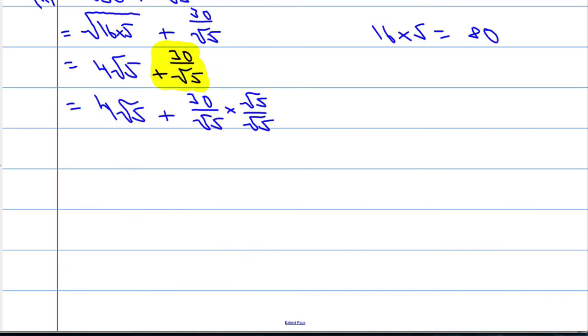30 times √5 is 30√5, and then √5 times √5 is just going to be 5.